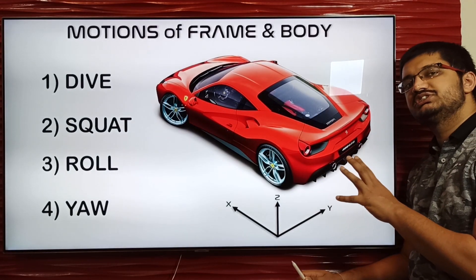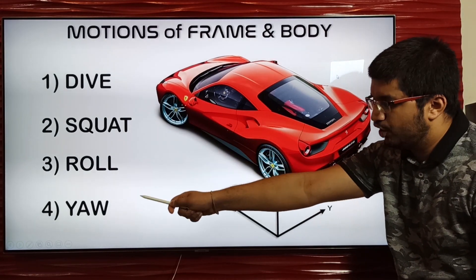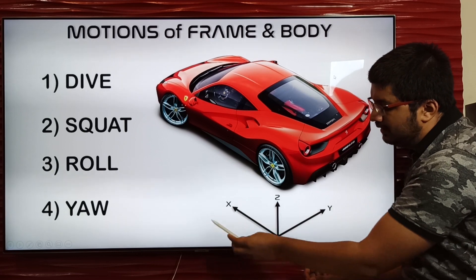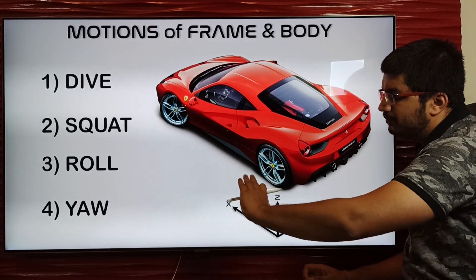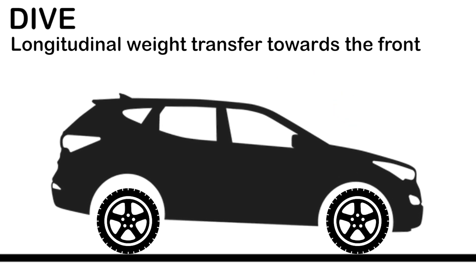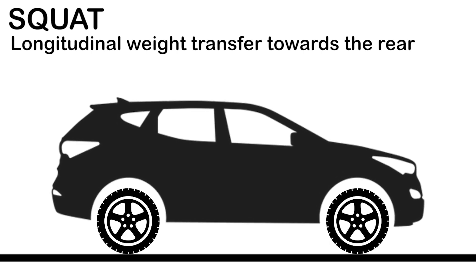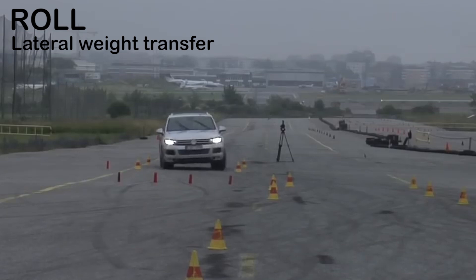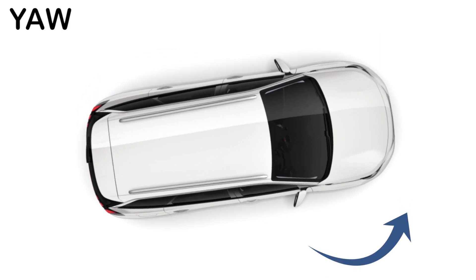To perform all these tasks, the suspension system must control the vehicle dynamics by overcoming four main motions of the frame and body: dive, squat, roll, and yaw. The x-axis runs in the direction of motion, the y-axis runs perpendicular from driver to co-driver, and the z-axis runs perpendicular to the road plane. Dive is longitudinal weight transfer toward the front, about the y-axis, during braking. Squat is longitudinal weight transfer toward the rear, also about the y-axis, during acceleration. Roll is lateral weight transfer — rotation about the x-axis — occurring during cornering. Yaw is motion about the z-axis, generally occurring when wheels lose traction, such as during drifting.